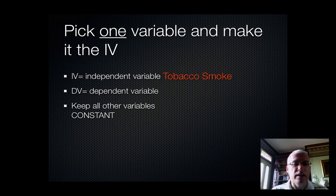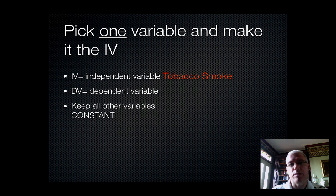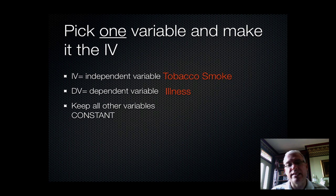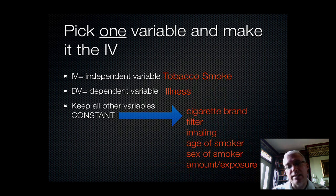Tobacco smoke is going to be our independent variable — something we can control. We can set up situations where the amount of cigarette smoke a person is exposed to is controlled. Then we're going to count or measure how many of those people get sick, and we're going to keep all the other variables constant — we're not going to let them change.